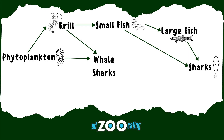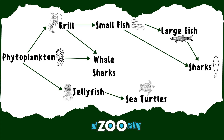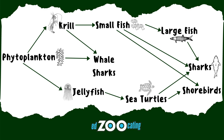While whale sharks and krill really enjoy the phytoplankton, so do jellyfish. Jellyfish float around and slurp up that phytoplankton, which makes them a primary consumer. However, jellyfish have a lot of predators and they're a really good source of protein for sea turtles. Sea turtles themselves can actually become prey for sharks and shorebirds, and those shorebirds will also eat small fish. As jellyfish float around, they could also become prey for large fish and sharks — making sharks secondary and tertiary consumers in the same food chain.